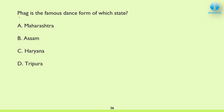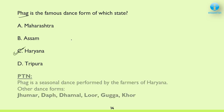Next: Fag is the famous dance form of which state? The correct answer is C — Haryana. It is a seasonal dance performed by farmers — a harvesting-related festival dance form. Other important dance forms of Haryana: Phala, Jhumar, Dhaaf, Dhamal, Lur, Guga, and Khor.